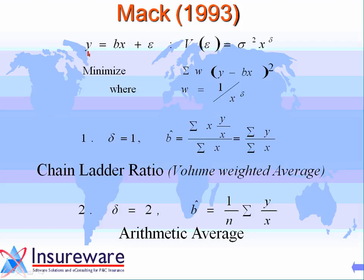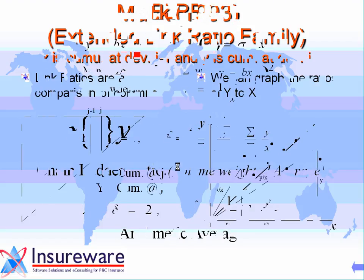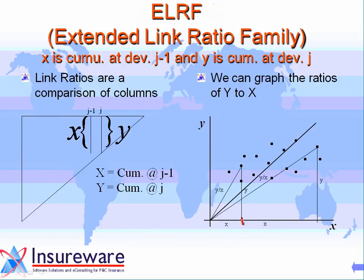This model says that given x, the average value of y lies on a hypothetical average ratio or average trend line. The first assumption says: given this value of x, the average value of y — the next cumulative at the next development period — lies on a hypothetical average ratio line.